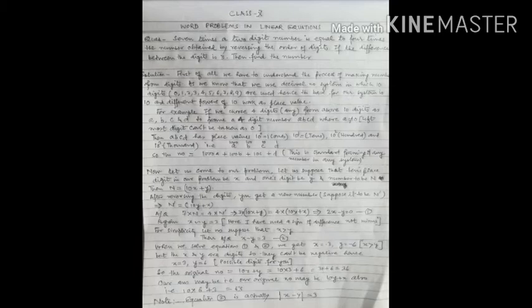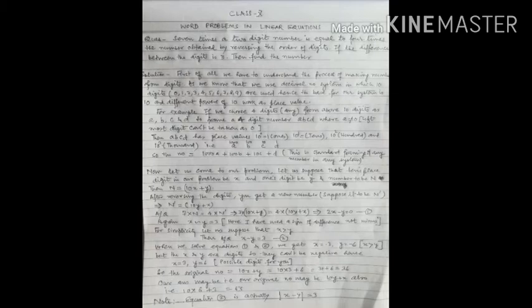The second equation says that the difference between the digits is three. We don't know whether x is greater than y or y is greater than x, so the difference is equal to three. If we suppose that x is greater than y, then we can write x − y = 3, and this is our second equation.